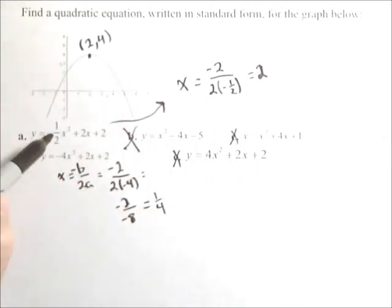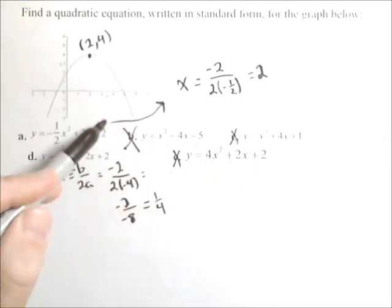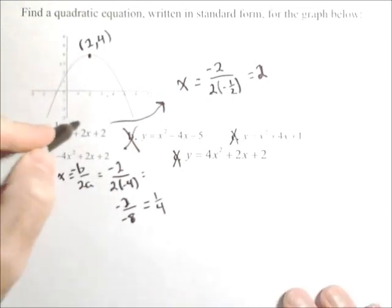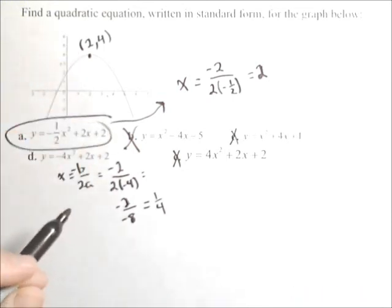So this is the only quadratic that has a negative coefficient, which will make it open down, and has an x-coordinate of two for the vertex, so the answer is a.